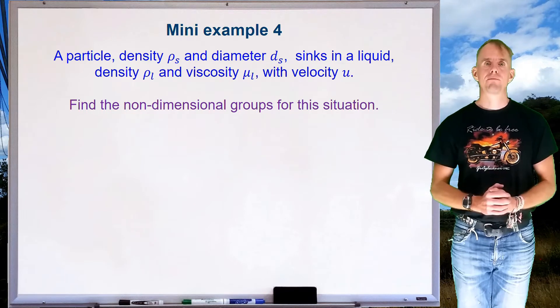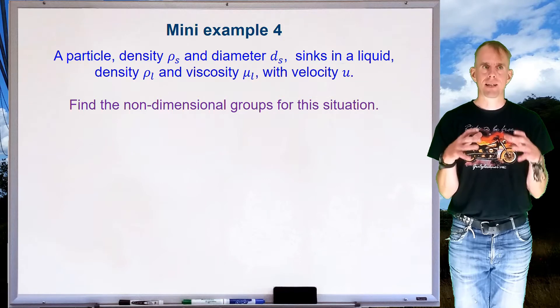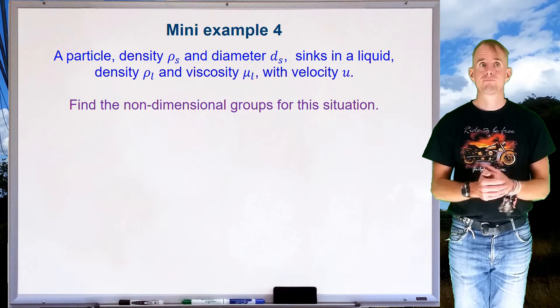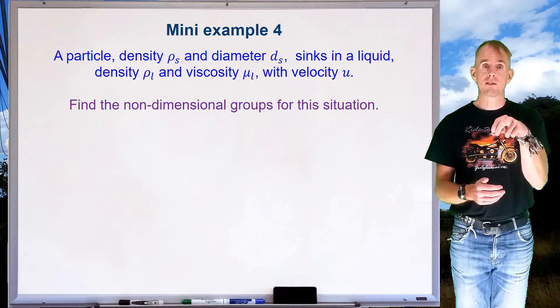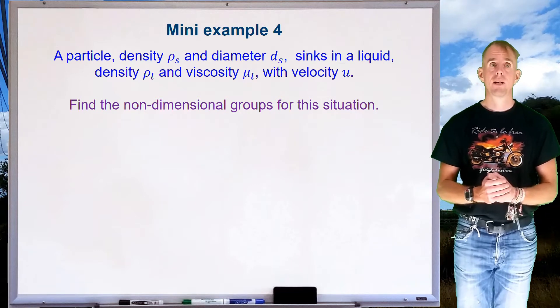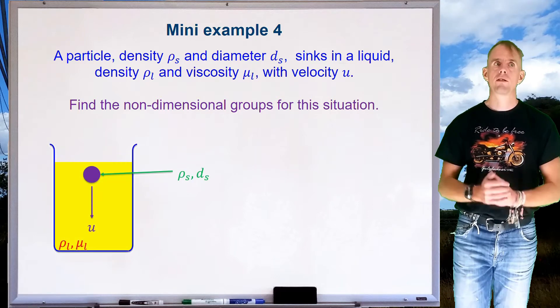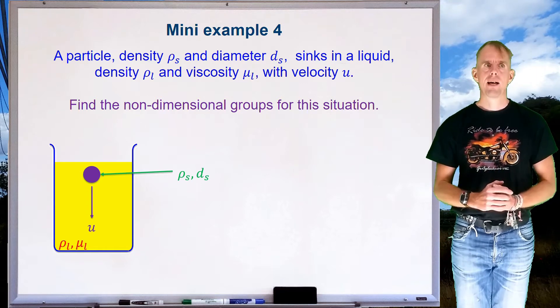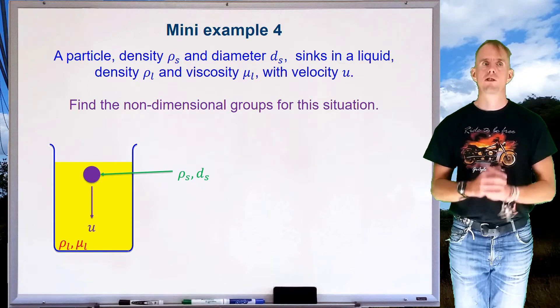For our final example, let's look at a slightly different fluid mechanics scenario. Let's say I now have a beaker of liquid. That liquid has a density and viscosity, ρl and μl. I'm going to get a particle with a solid density ρs and a diameter ds, and I'm going to drop that particle in the liquid and watch it fall. Let's find the non-dimensional groups for this particular problem. Again, start with your diagram. There's my beaker of yellow liquid with my purple particle, and I have just released that particle and I'm watching it accelerate to its terminal velocity.